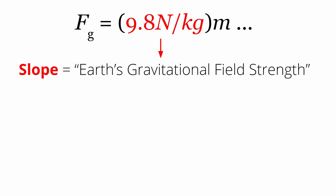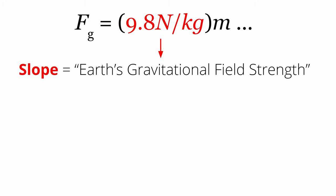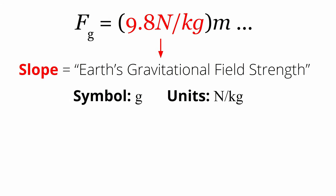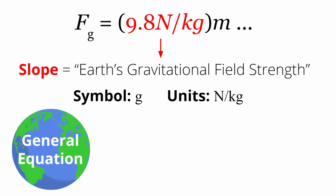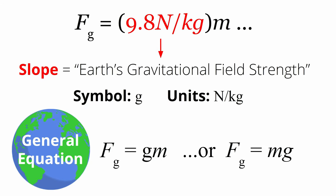After students reach a consensus about the meaning of their slope and the significance of the y-intercept, you can introduce the concept of gravitational field strength and write the general equation on the board. The formal name given to the slope in this experiment is the Earth's gravitational field strength — the size of the gravitational force experienced by each kilogram of an object's mass near the Earth's surface. The accepted gravitational field strength for the Earth is 9.8 newtons per kilogram, represented by the symbol lowercase g. The general equation is written as fg equals m times g.